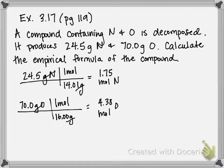Now we can write what's called a pseudo formula for each of these. So our compound right now is N1.75O4.38. Now obviously we can't have a compound with decimals as our subscripts. They have to be whole numbers.